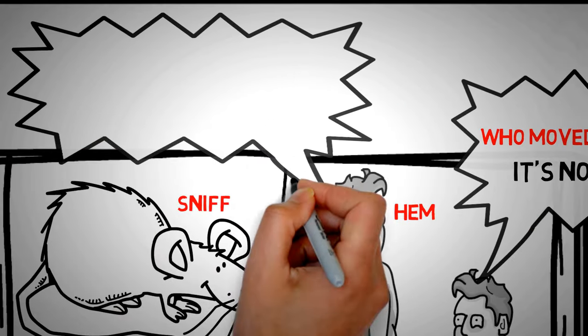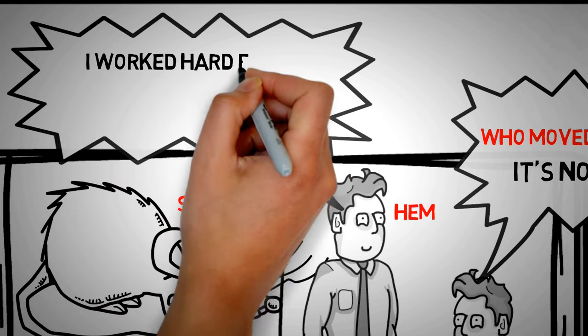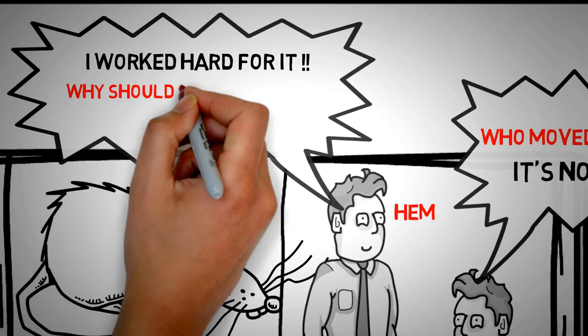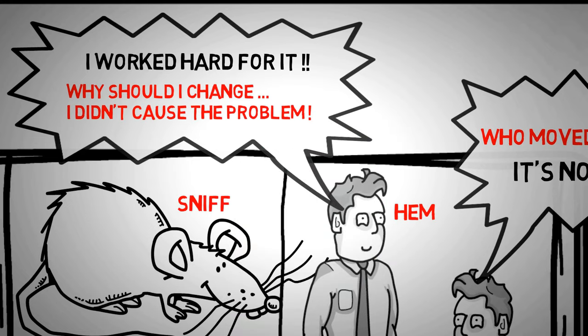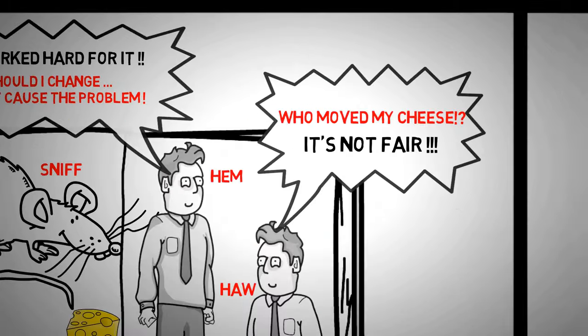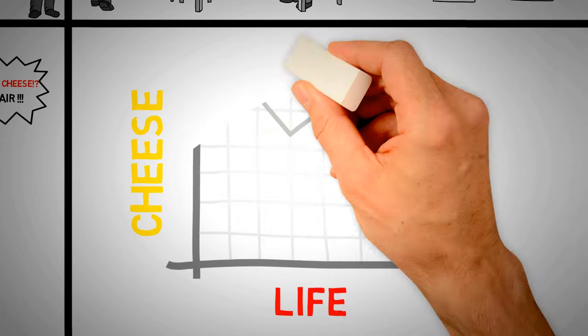Hem's complicated brain and deep belief system demanded to know why this had been done to him. While Hem and Haw were busy worrying about what happened to them, Sniff and Scurry were already out finding new cheese in uncharted territory, and it didn't take long before they found new cheese and started enjoying life again.